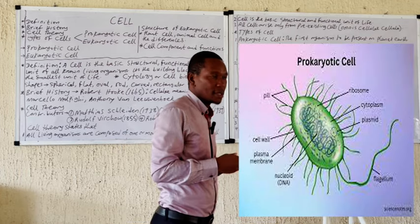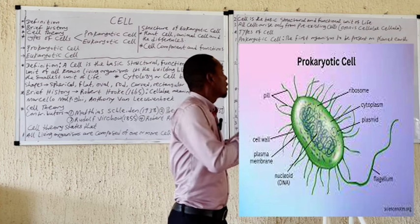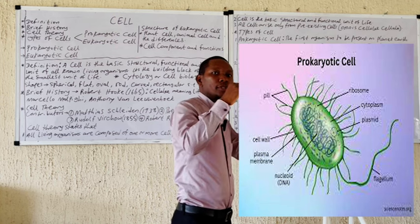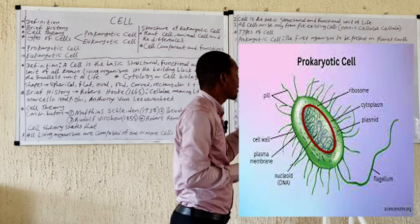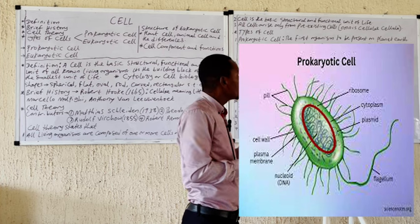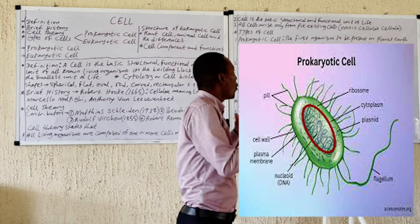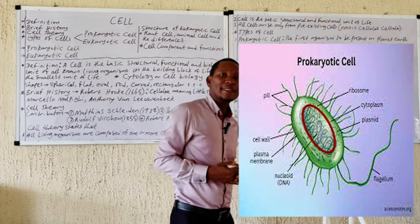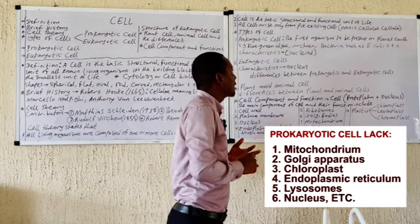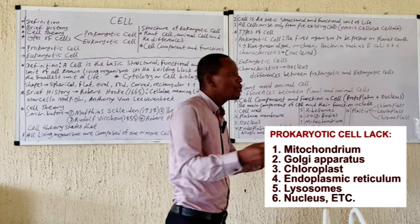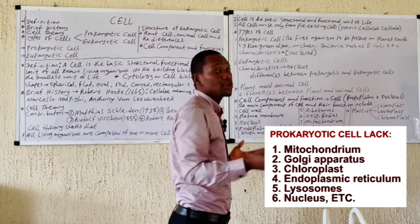The unique characteristics of prokaryotic cells include the fact that they do not have a true nucleus, though they have a region called the nucleoid where the chromosome and nuclear material are found. As you can see in the diagram on the board, there is no true nucleus. They also do not have membrane-bound organelles — they lack mitochondria, chloroplasts, Golgi apparatus, and lysosomes.